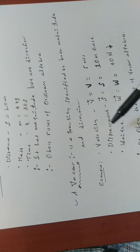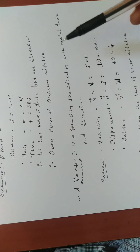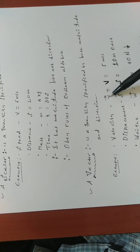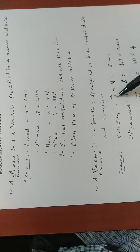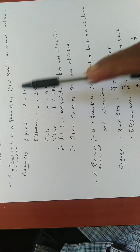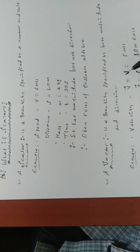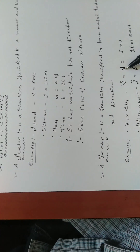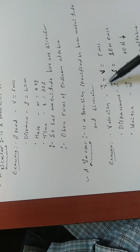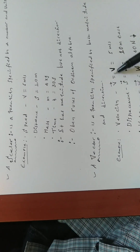For example, velocity, displacement, weight, and acceleration are all vectors, because in addition to their magnitude they have direction. Velocity is represented by v with an upper arrow. If we write only v, it is speed; but v with an upper arrow means velocity. Without the arrow, we bold v to show it is a vector.